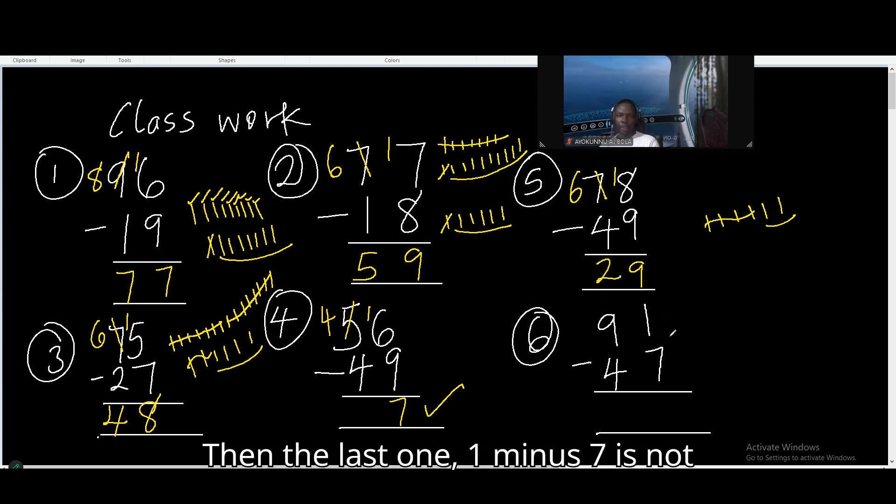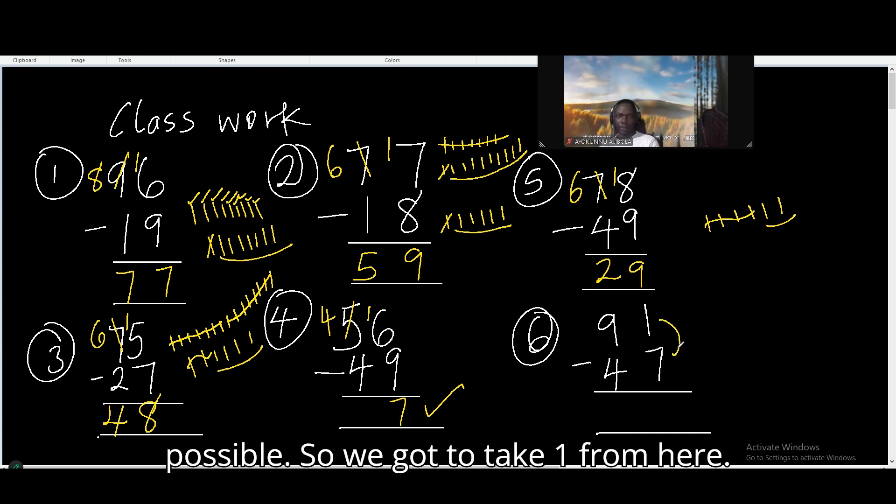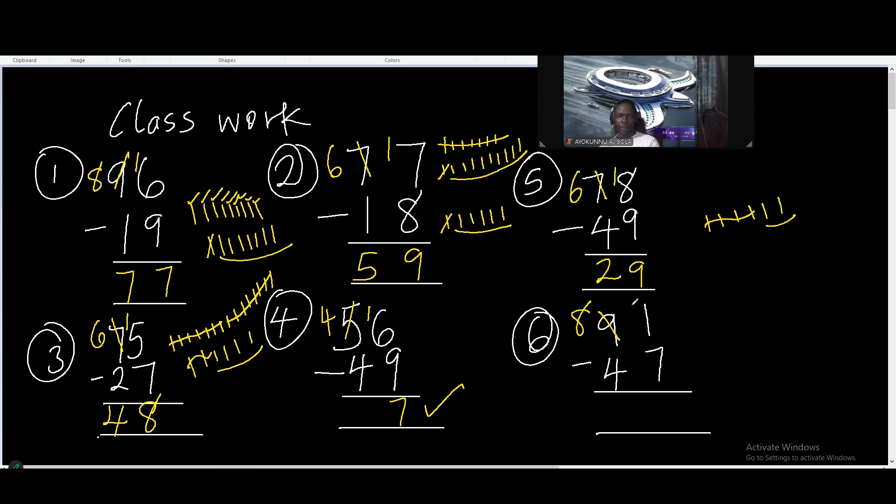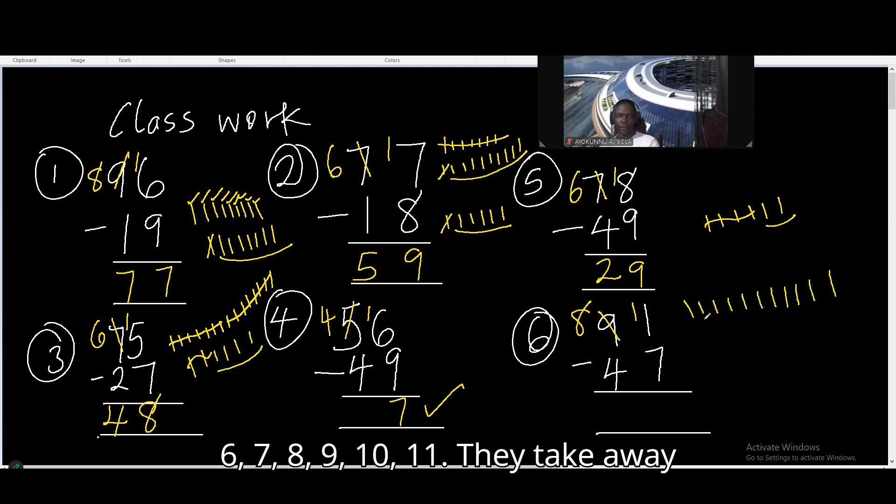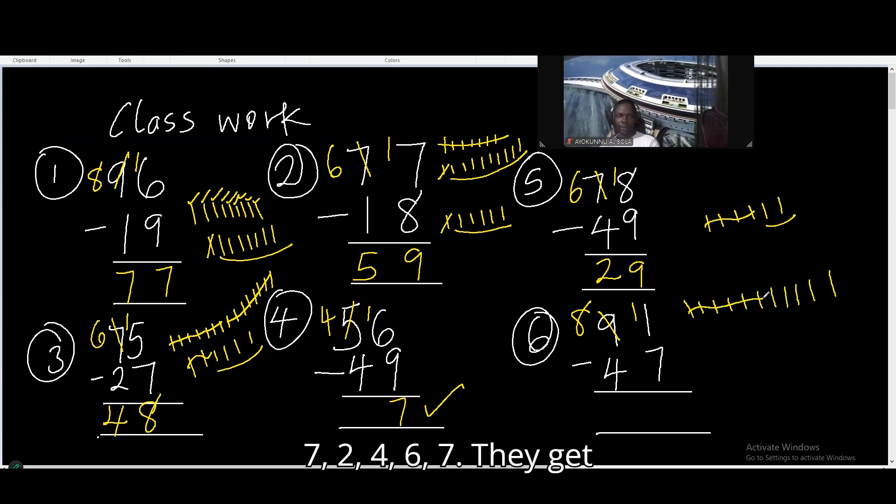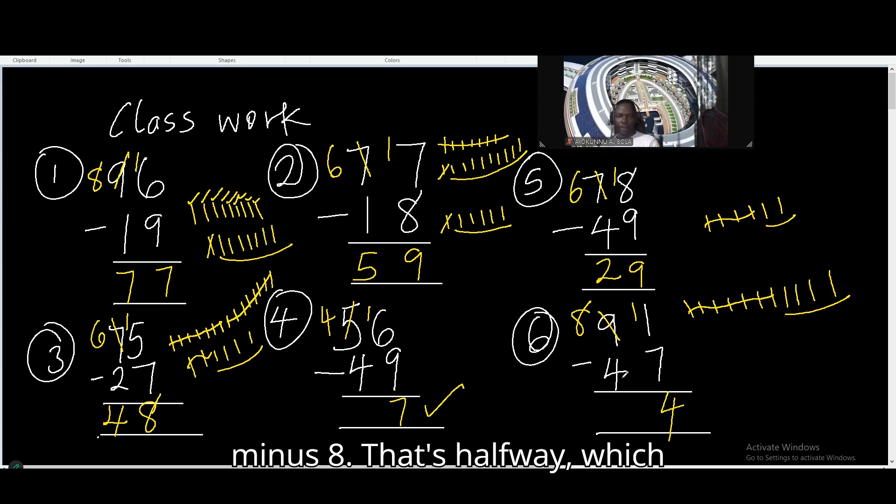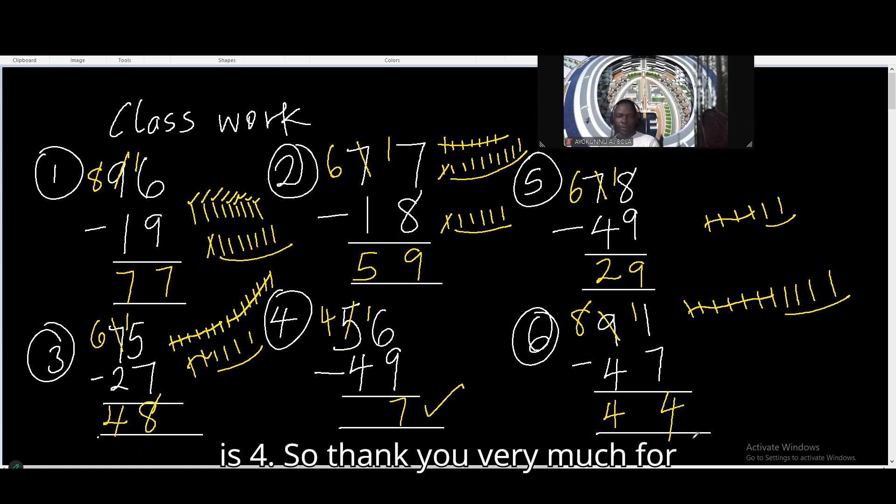Then the last one. 1 minus 7 is not possible. So we take away 1 from here. That's going to be 8, and this will be 11. So 1, 2, 3, 4, 5, 6, 7, 8, 9, 10, 11. They take away 7. They get 4 remaining. Then here you have 8 minus 4. That's half of 8, which is 4.